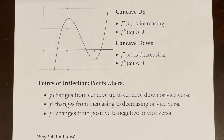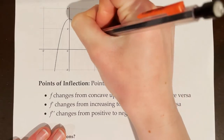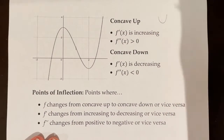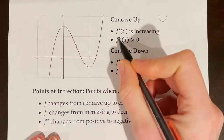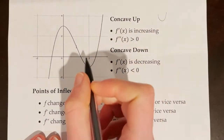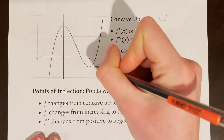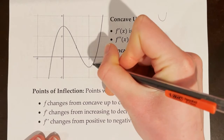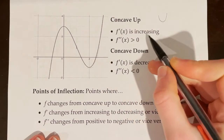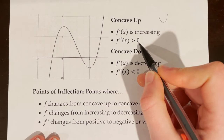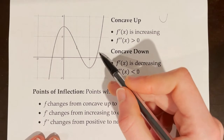Let's start by defining concave up, concave down, and points of inflection. Looking at this graph, it is concave up from one point all the way to another. Concave up just means that the curve looks like a bowl opening upward. When a function is concave up, f' — the first derivative — is increasing, because the slopes of the tangent lines go from negative to zero to positive, getting steeper as we go. So f'', the second derivative, is greater than zero, because the slope of the tangent lines is positive.